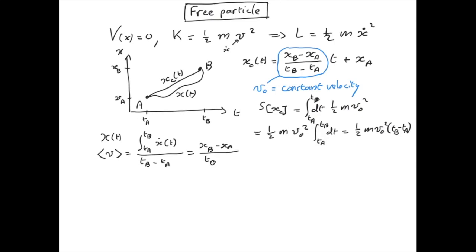This is nothing else but the velocity v₀ we introduced earlier. So interestingly, whatever the path between these two events, the average velocity will be the same for every path — it will be v₀. Let's also define the average of the square of the velocity: that's the integral between t_a and t_b of x-dot squared, divided by t_b minus t_a.